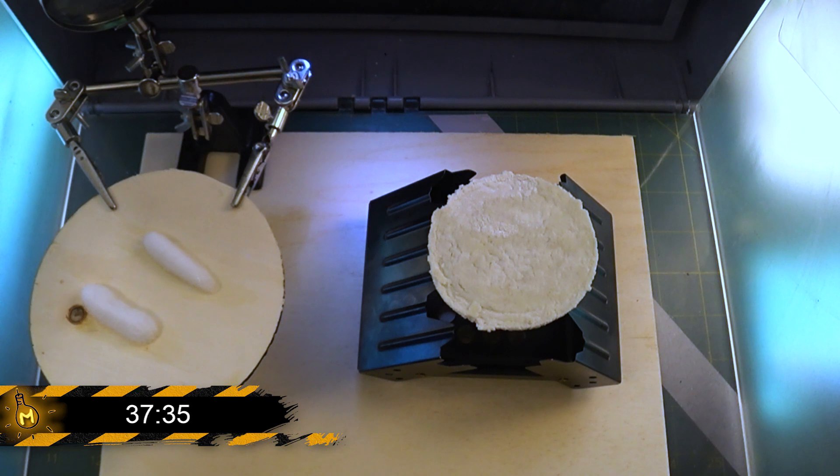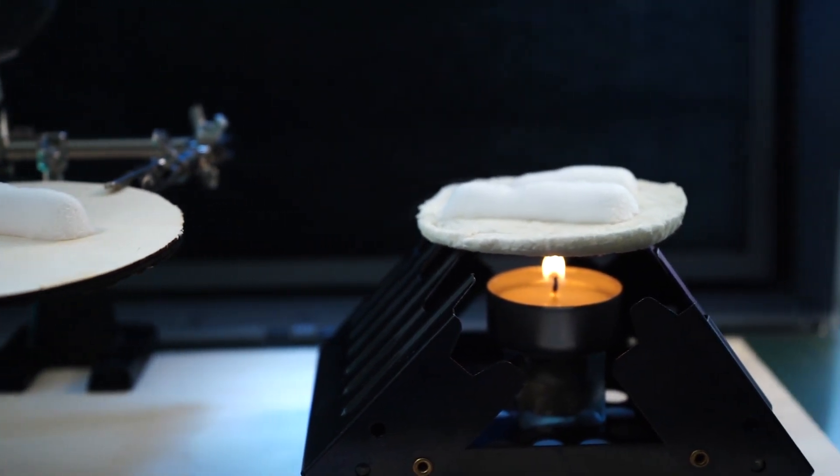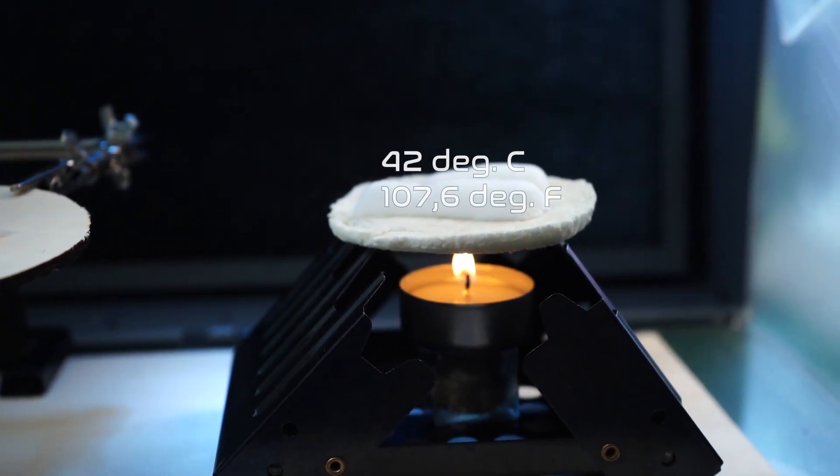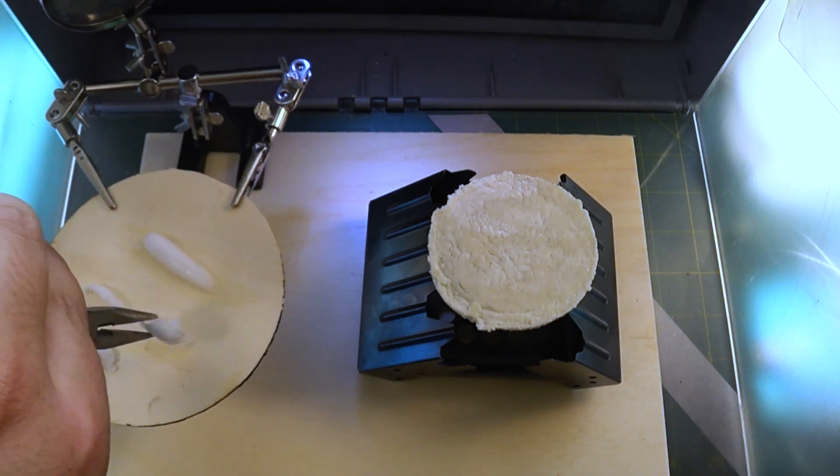37 minutes, 35 seconds later, we have a clear result. Sure, the starlight resisted the candle flame, no problem, but it still heated up to 42 degrees centigrade on the unexposed side and so accelerated the sublimation process.